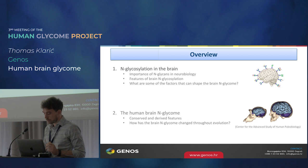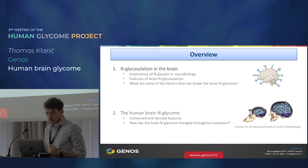In the second part of the talk, we'll focus on the human brain N-glycome — what are the conserved features and what are the derived features that make it unique? And then finally, we'll touch on some of the factors that have shaped the evolution of the brain N-glycome in mammals.